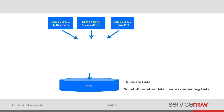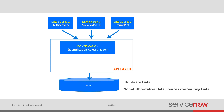To solve these issues, we introduce an API layer that sits between the data sources and the CMDB. Different data sources call this API to write to CMDB. The API layer performs identification and reconciliation, where identification defines the process of uniquely identifying the CI and relies on identification rules. Identification itself helps address the data duplication issue.